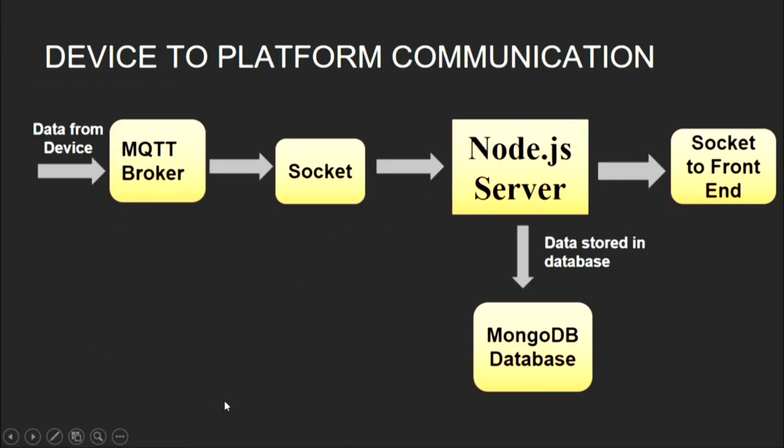The platform communicates with the device in a bidirectional way. Device-to-platform communication happens when data from a device is sent — it is published onto a broker. We subscribe to the data and send it to the server using a socket. The server processes the information based on the type of data received, whether it is sensor data or a feedback signal, stores it into the MongoDB database, and sends it to the front-end in almost real-time.